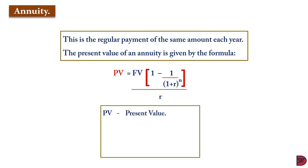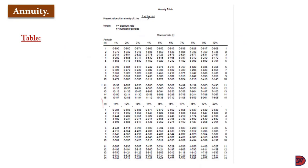PV is the present value, FV is the future value, r is the rate of interest, and n is the number of periods. You can also use the annuity table.